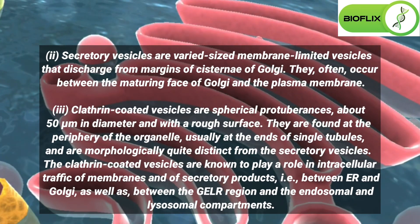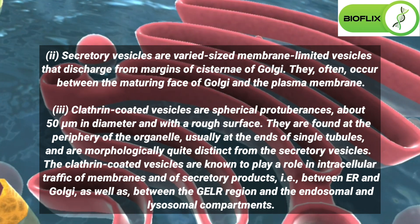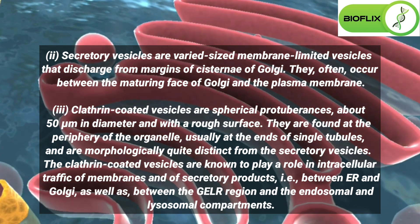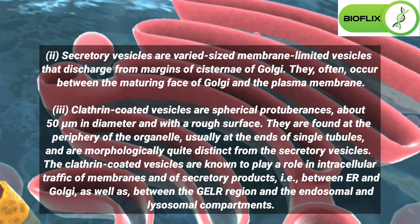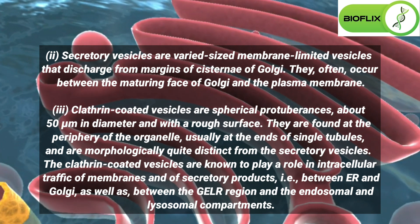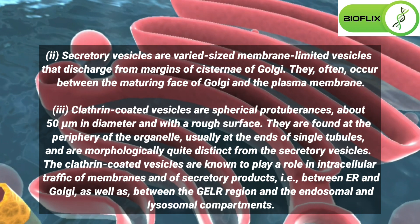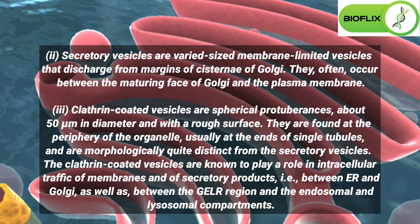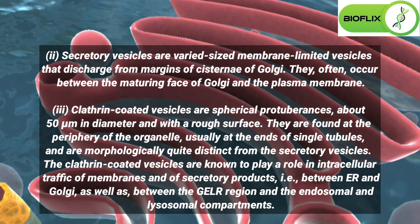Secretory vesicles are varied-sized membrane-limited vesicles that discharge from margins of cisternae of Golgi. They often occur between the maturing face of Golgi and the plasma membrane. Clathrin-coated vesicles are spherical protuberances, about 50 micrometers in diameter and with a rough surface. They are found at the periphery of the organelle, usually at the ends of single tubules, and are morphologically quite distinct from the secretory vesicles.